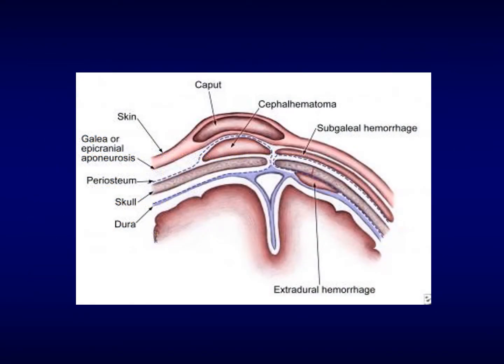Let's have a close look at the picture of the skull. We have the skin, and then we have the layer of the galea or the aponeurosis — the fascia. And then we go here to the periosteum, which is the lining over the bone. And then there is the bone or the skull. And there start the layers of the meninges.